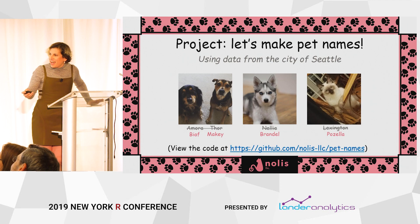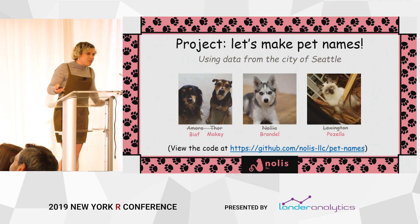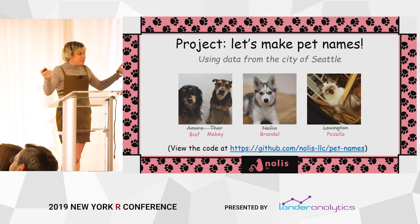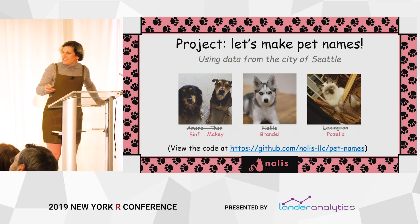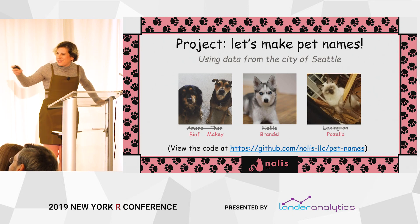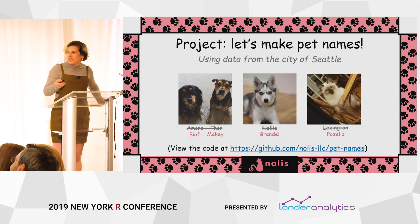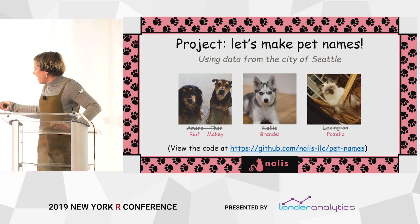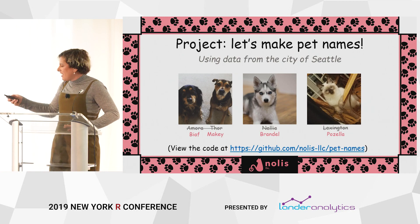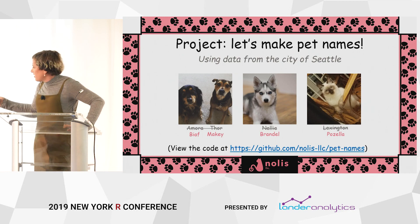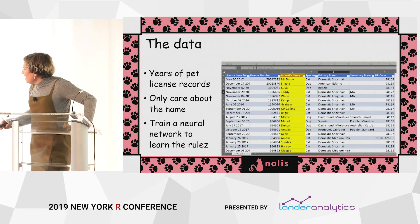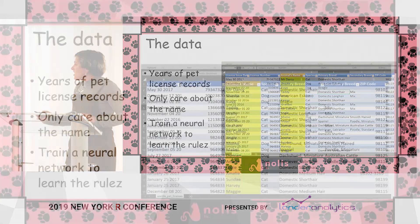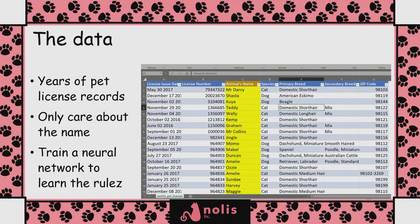When you hear people bragging about how many GPUs they needed, know that you can do this on your five-year-old computer. Our project is to make some pet names using data from the city of Seattle. These pet pictures are all from people in the R community who generously donated them. We're going to take those names, generate new funny names with a deep learning network. All the code will be available online at the end of the talk.